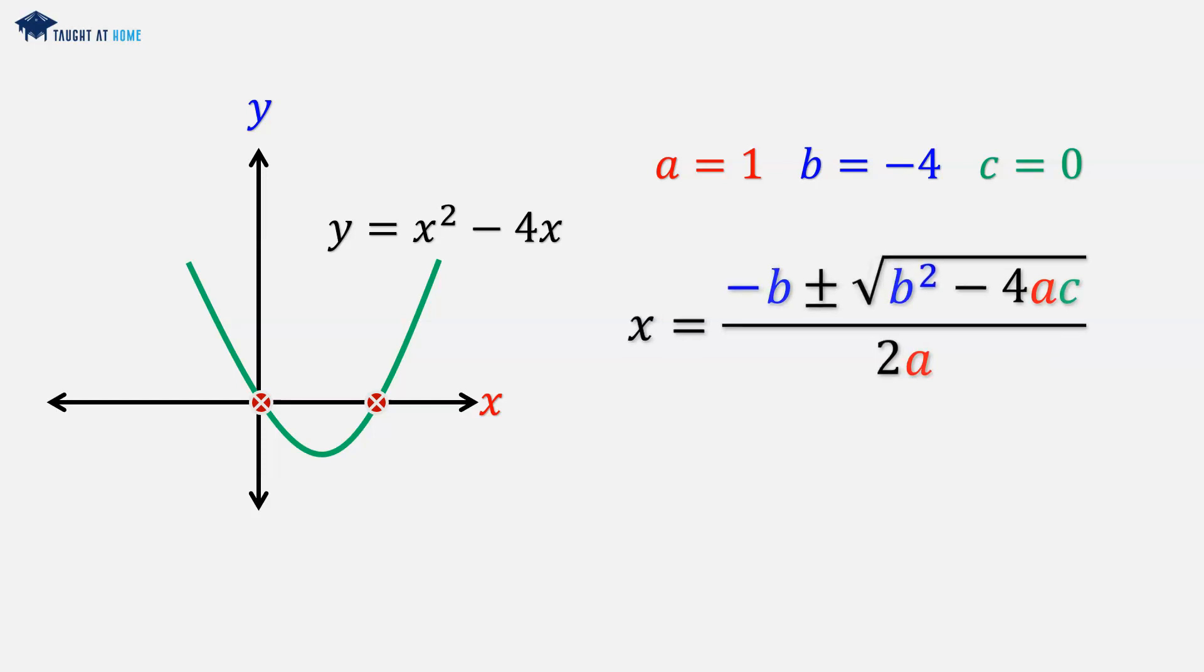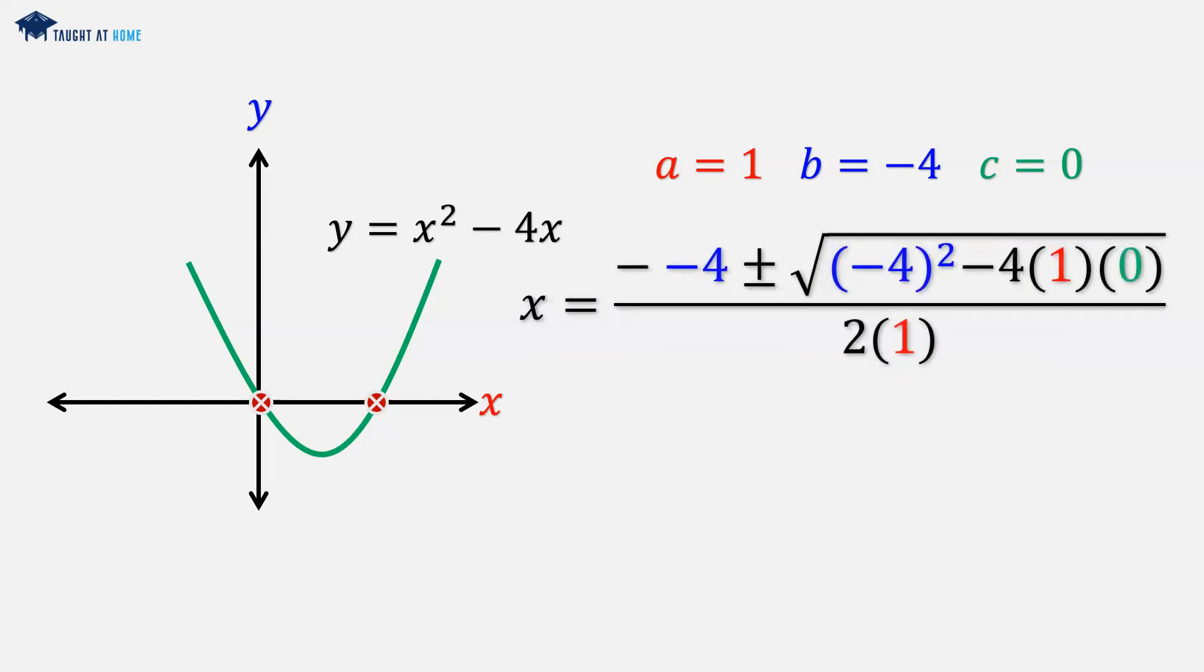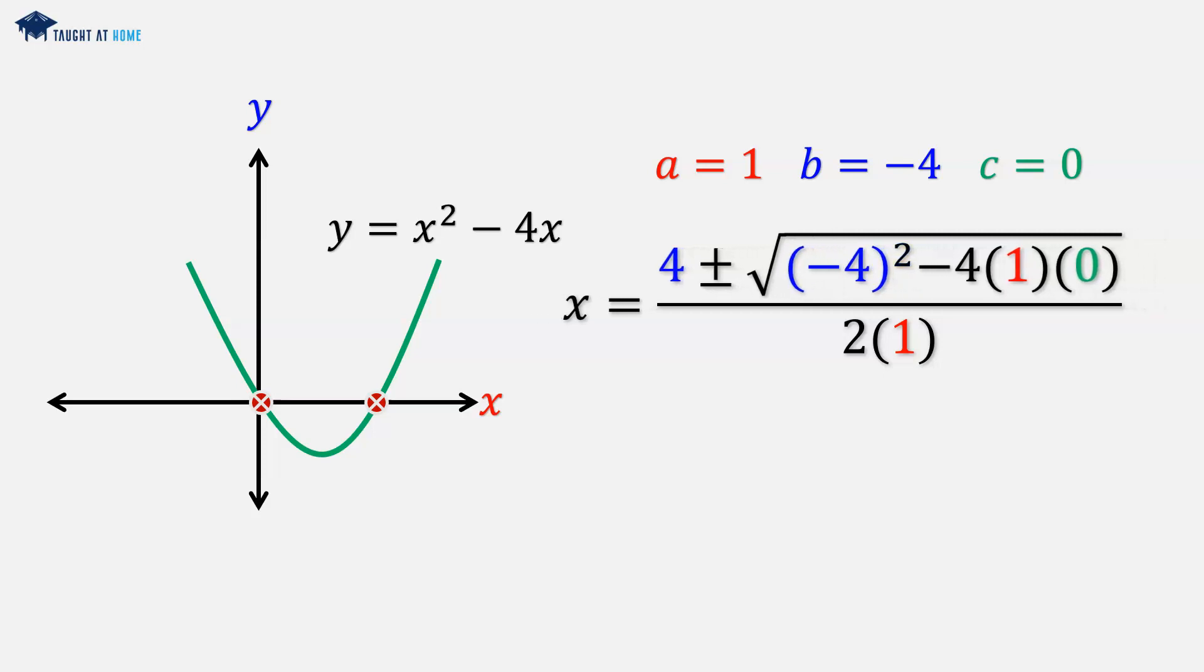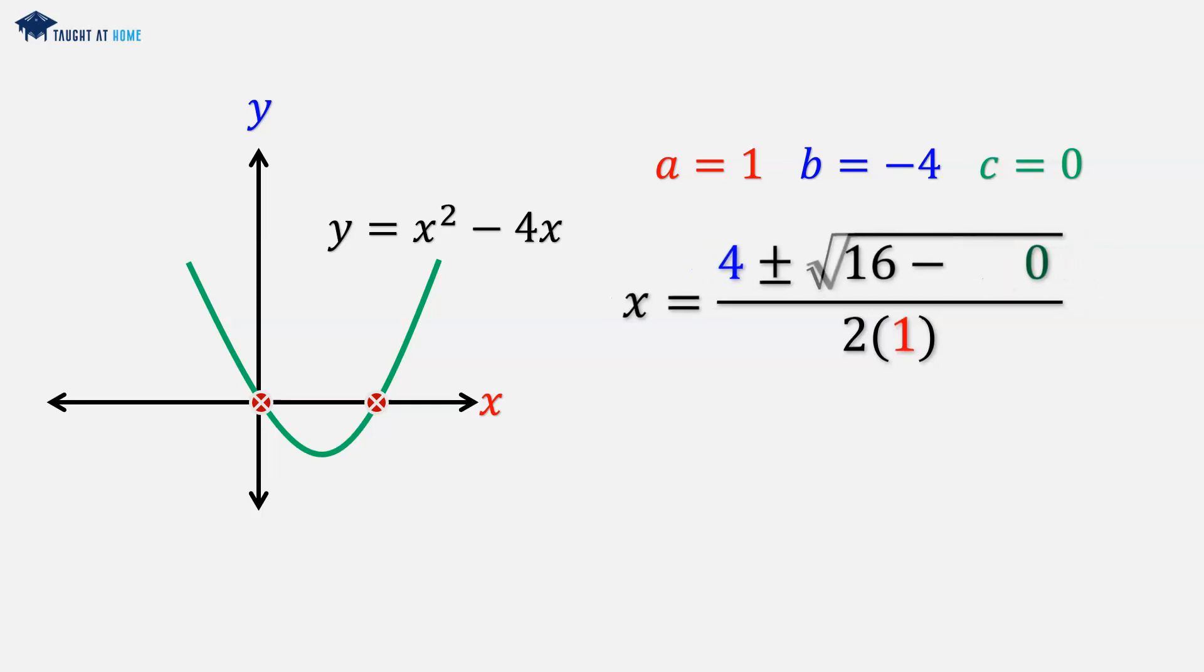So plugging these into the quadratic formula and tidying this up, we're going to have 16 minus 4 times 1 times 0. Well that's just 0, so that's the square root of 16. On the denominator, 2 times 1 is 2.